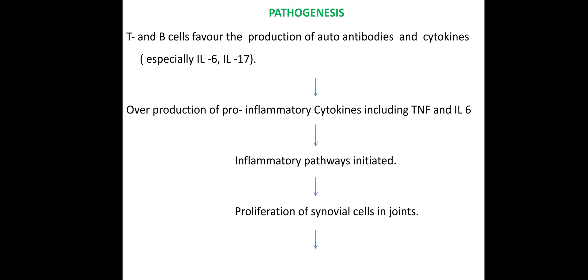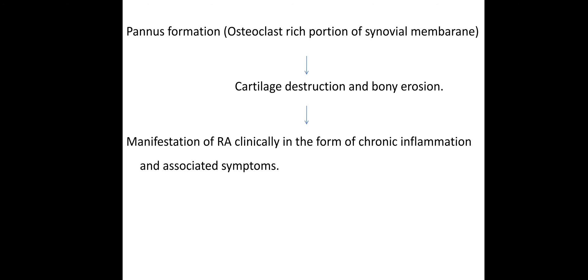The inflammatory mediators stimulate synthesis and inflammatory pathways automatically initiate. In the synovial joint there is cell proliferation, leading to pannus formation. Osteoclast activation occurs, the cartilage is destroyed and the bones are destroyed. This is the pathogenesis of rheumatoid arthritis — the synovium layer is first destroyed, followed by cartilage tissue, and then the tendons and ligaments become weak and stretched, causing the joint to lose its shape and size.